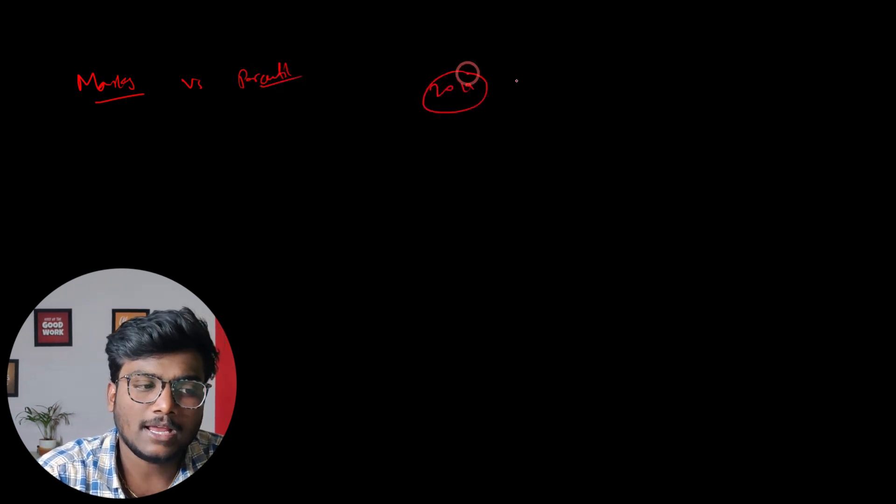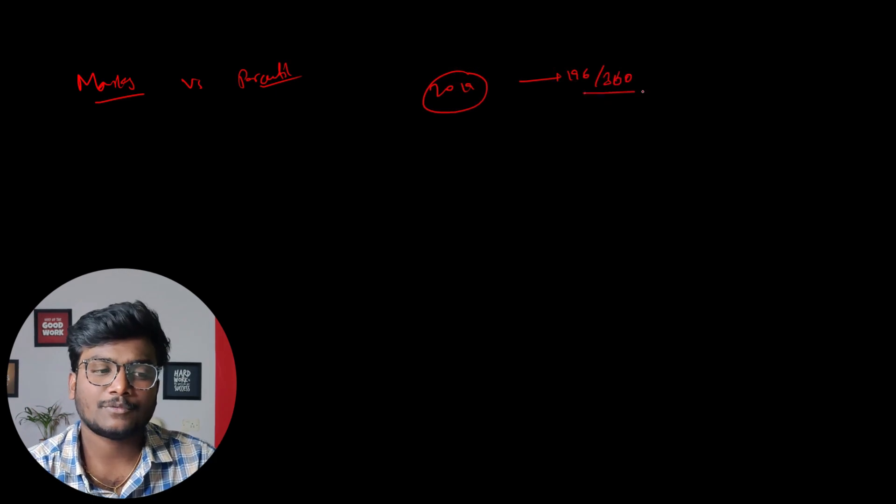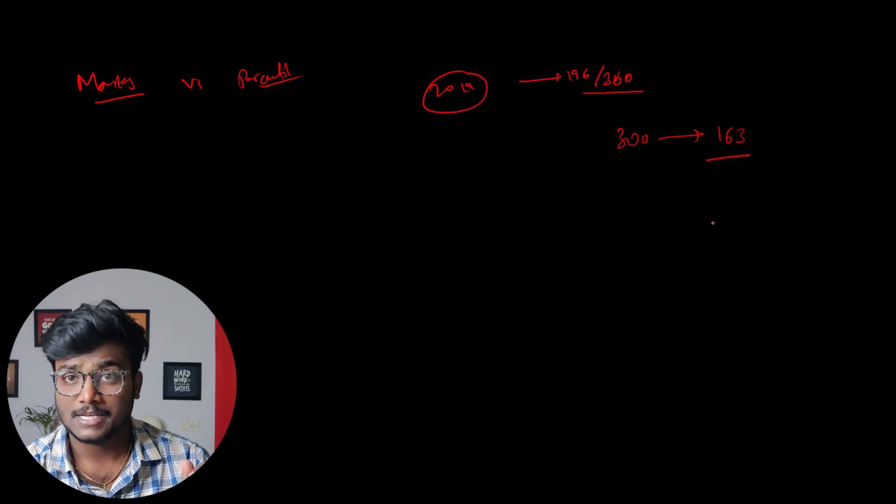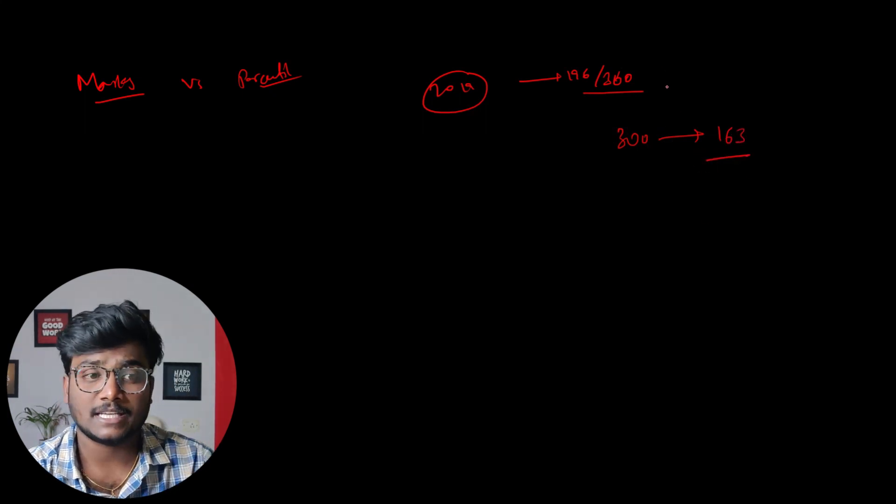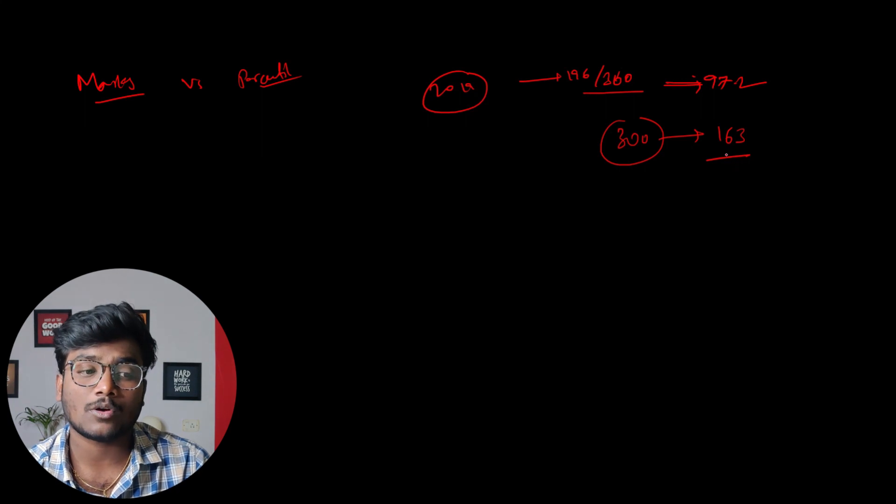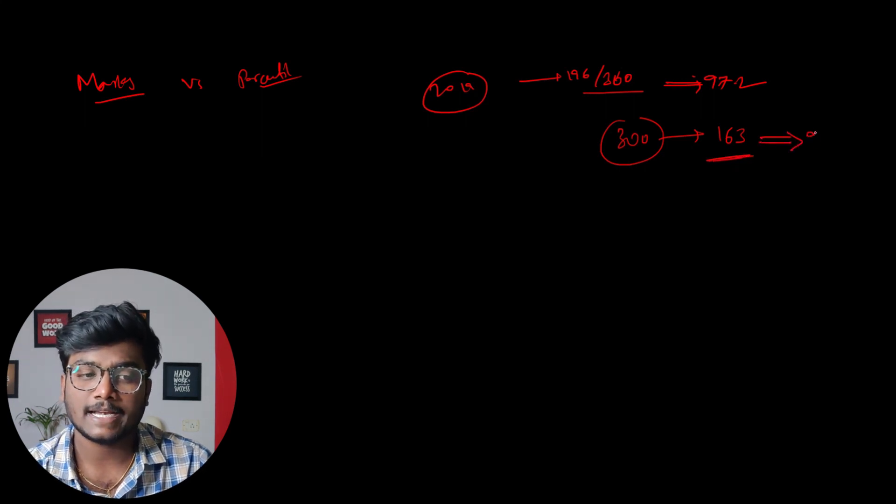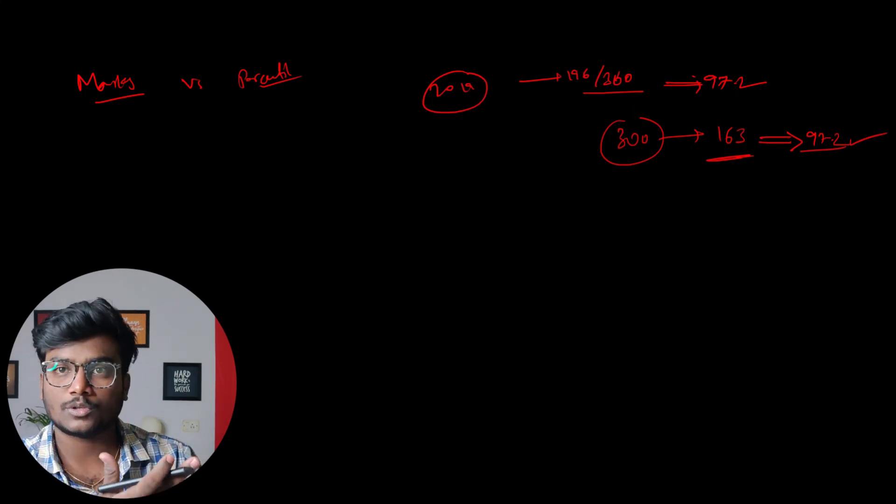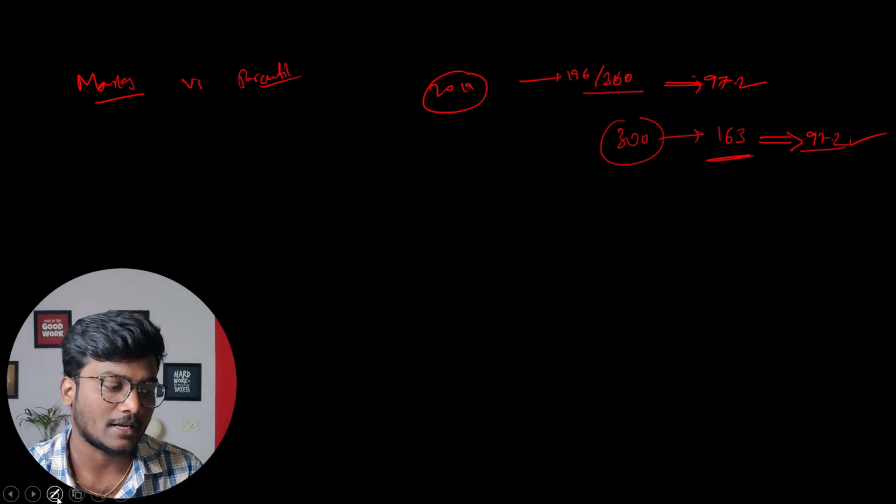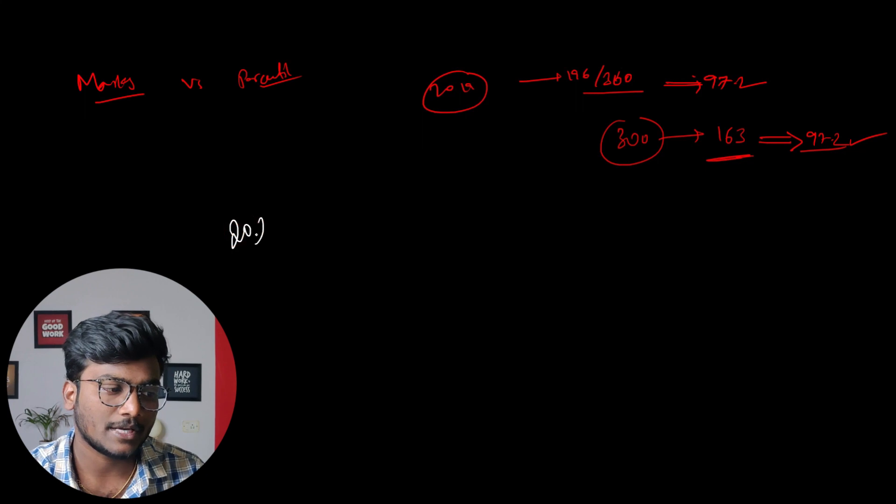So now talking about the most awaited thing, marks versus percentile. So at a particular mark, for example, let me talk about my case in 2019. I got 196 out of 360. So as the paper was for 360, I got somewhere around 196. If the paper was for 300, then I would have got somewhere around 163, right? So at 196 out of 360, I got 97.2 percentile. If the same paper was for 300 marks, I would have got somewhere around 163, so I would have got 97.2 percentile. So this was my score in 2019. Of course, it changes every year, every shift and all those things will be there. So let's discuss all those. And let me talk about 2023, 2023 session one.